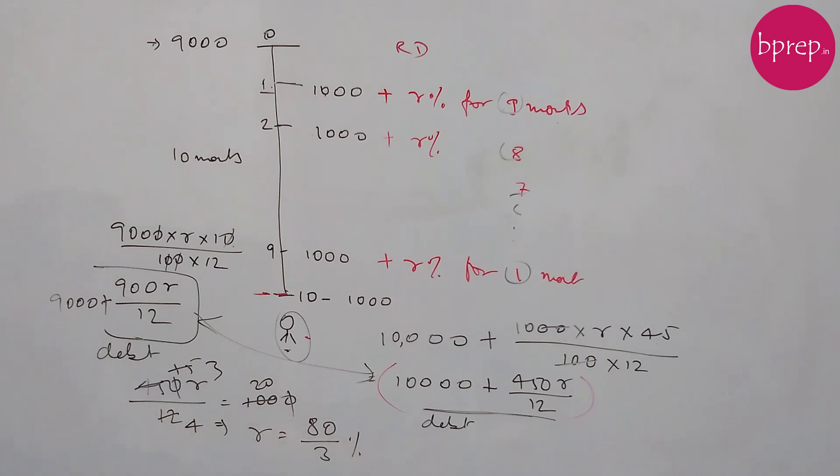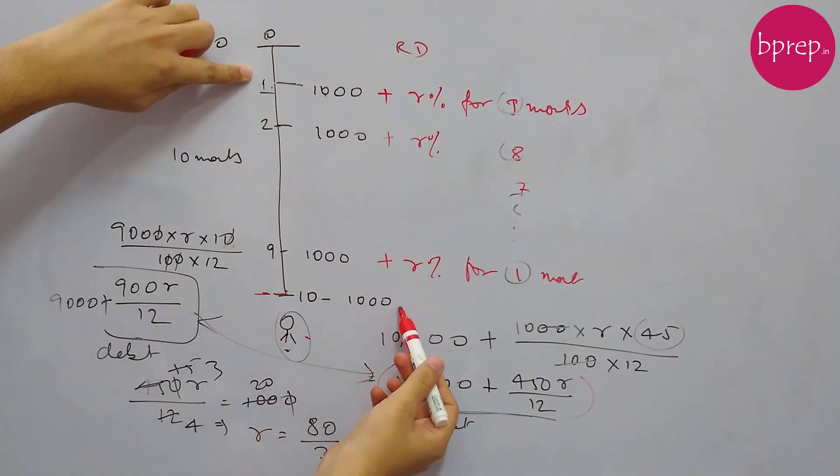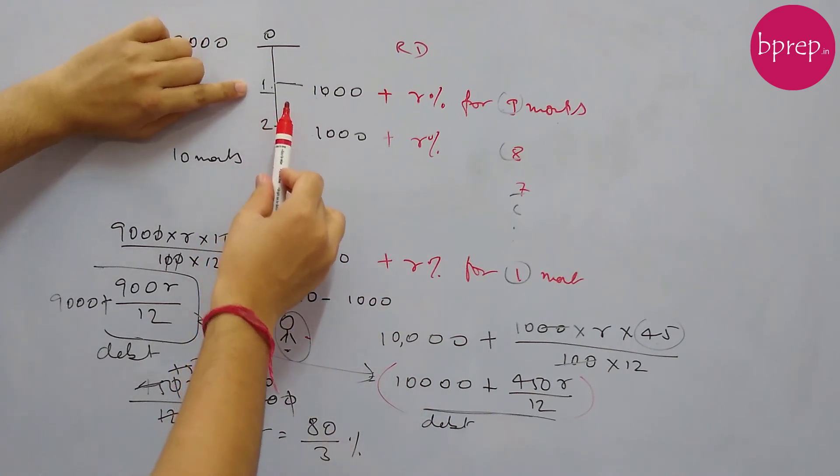Now in exam we don't have to do all this. If we have understood the concept, why do we have to do all this just to get this number 45? Otherwise everything we can write in the first step itself. So how to get this 45 in the exam? See...